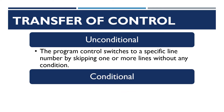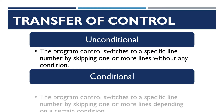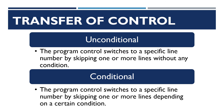The transfer of control is of two types: unconditional and conditional. When the program control switches to a specific line number by skipping one or more lines without any condition, it is known as unconditional transfer of control. If the program control switches to a specific line number by skipping one or more lines depending on a certain condition, then it is called conditional transfer of control. Now let's see how unconditional transfer of control works.